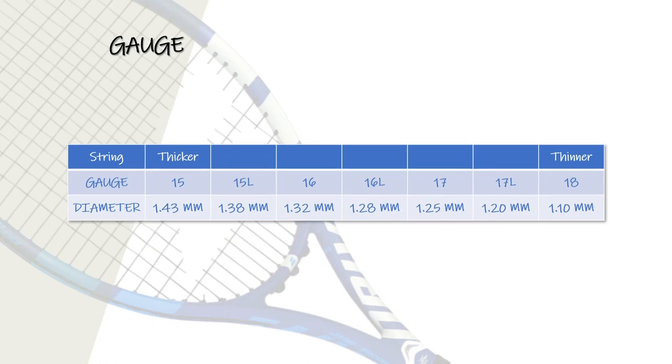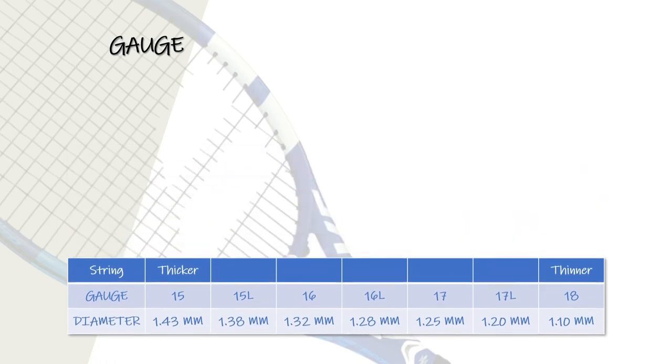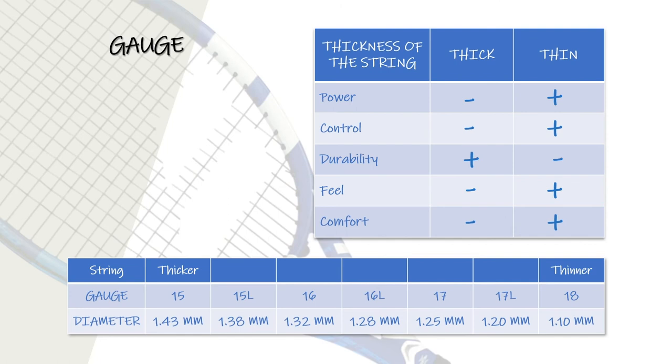The gauge can sometimes be an element neglected by players, whereas it can have an important influence on the feel of the game. Thin strings are often more flexible and pleasant to play, but their lifespan is limited because they break more easily. Conversely, thicker strings are harder and stronger, but lose power and control, among other things.